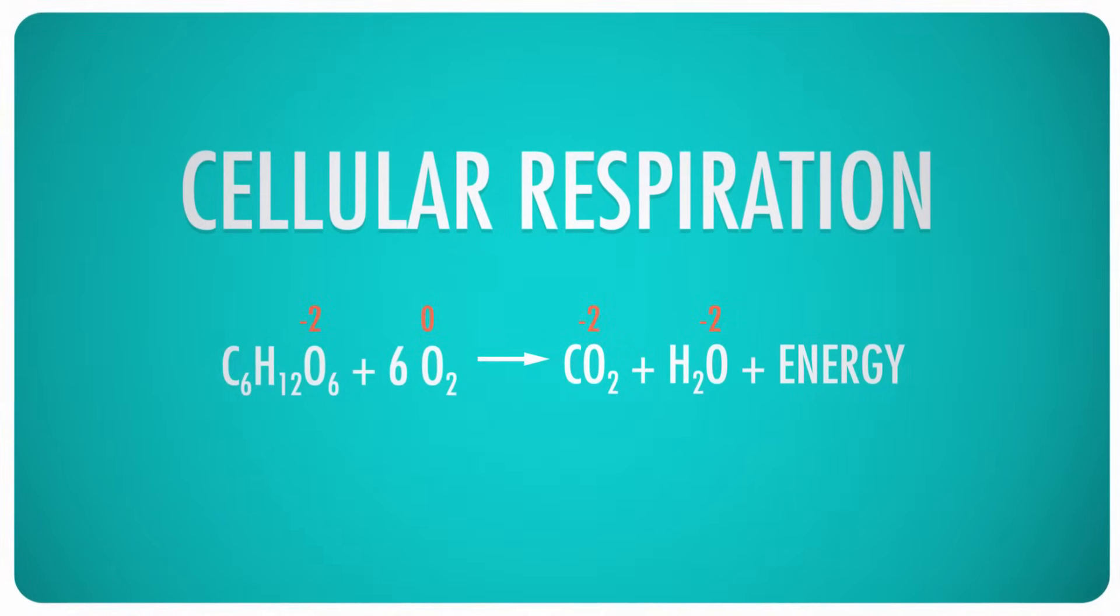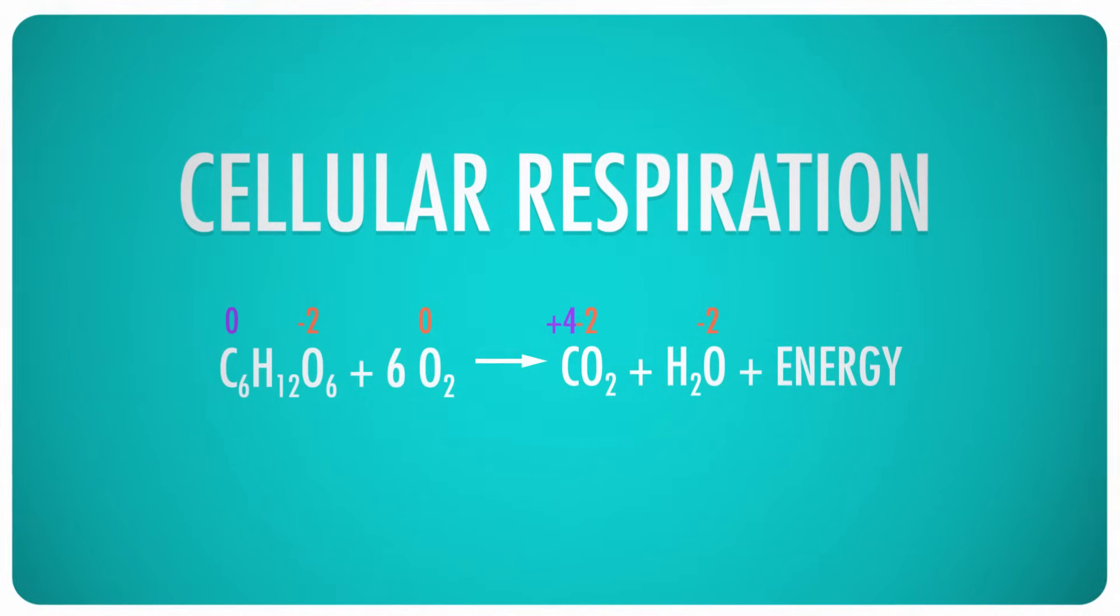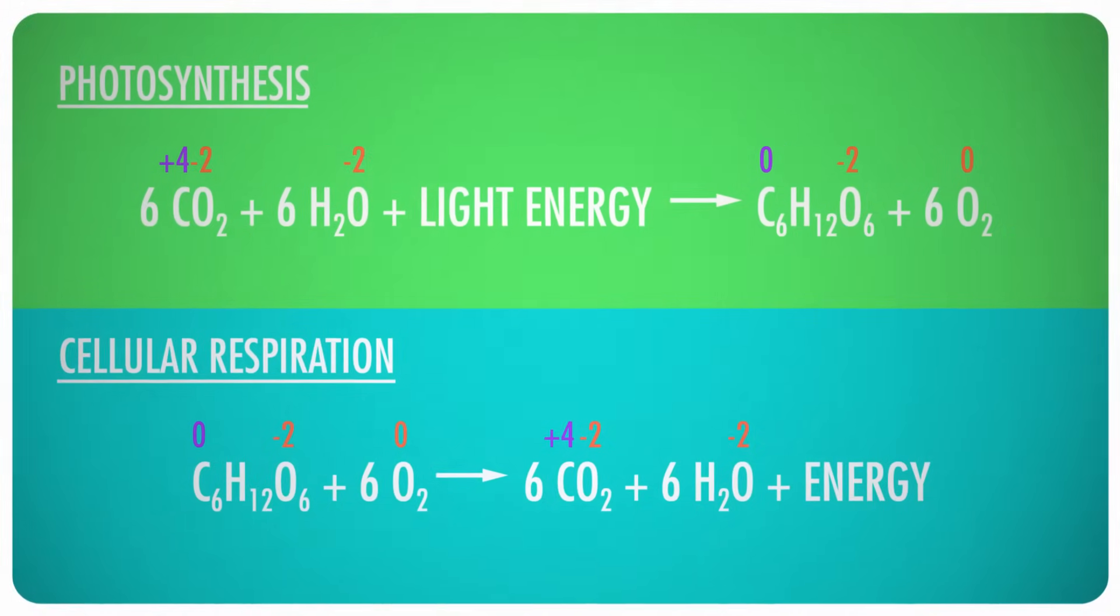In this case, the oxygen is reduced from an oxidation number of 0 to negative 2, and the carbon is oxidized from 0 to plus 4. That's right. The cells of living things re-oxidized the reduced carbon and re-reduced the oxidized oxygen to produce all the energy that keeps living things alive.